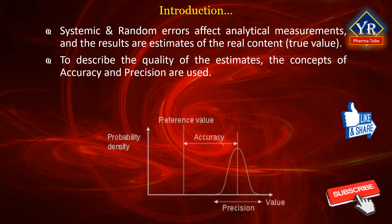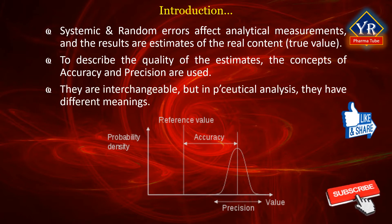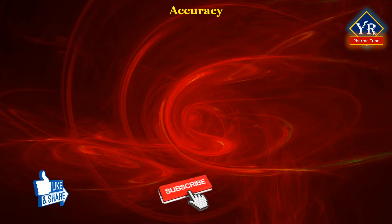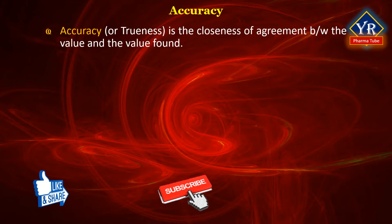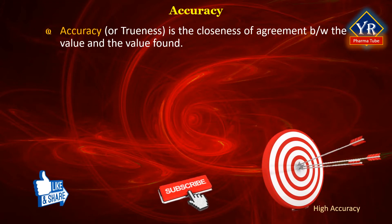In everyday life, it is common to use these terms interchangeably, but in pharmaceutical analysis they have two completely different meanings. Accuracy, or trueness, is the closeness of the agreement between the value which is accepted either as a conventional true value or an accepted reference value, and the value found.